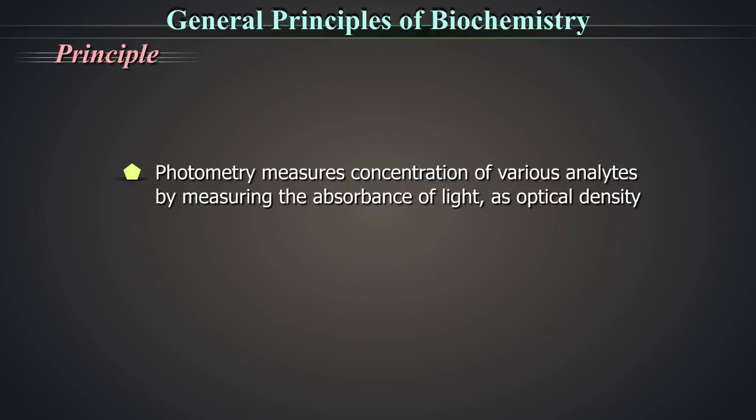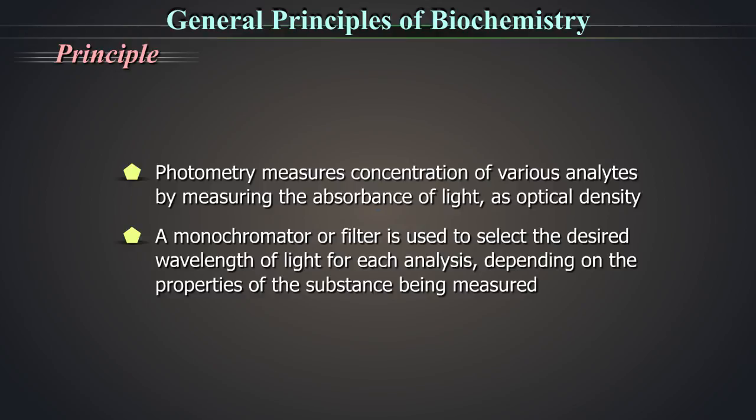Photometry uses this relationship to measure concentration of various analytes by measuring the absorbance of light as optical density. A monochromator or filter is used to select the desired wavelength of light for each analysis, depending on the properties of the substance being measured.